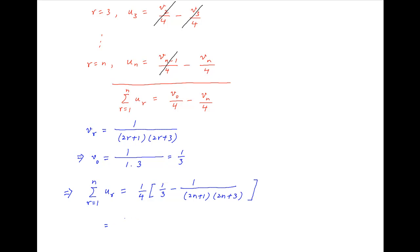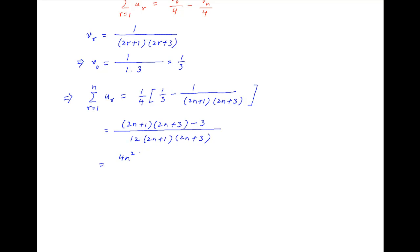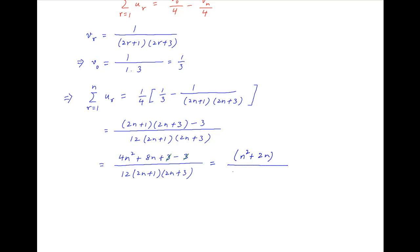This equals [(2n+1)(2n+3) minus 3] divided by [12(2n+1)(2n+3)], which equals [4n²+8n+3−3] divided by [12(2n+1)(2n+3)]. The 3s cancel in the numerator, giving the sum to n terms equal to (n²+2n) / [3(2n+1)(2n+3)], which can also be written as n(n+2) / [3(2n+1)(2n+3)]. This is the required answer.